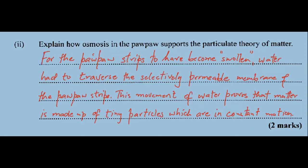Part three: the green papaya was a solid placed into a liquid. State how the arrangement of particles in a liquid differs from that in a solid and a gas. In a liquid, the particles are randomly arranged with small spaces between them. In a solid, the particles are arranged in a regular manner with no spaces between them, while in a gas, the particles are randomly arranged with large spaces between them. That gives you your full three marks.